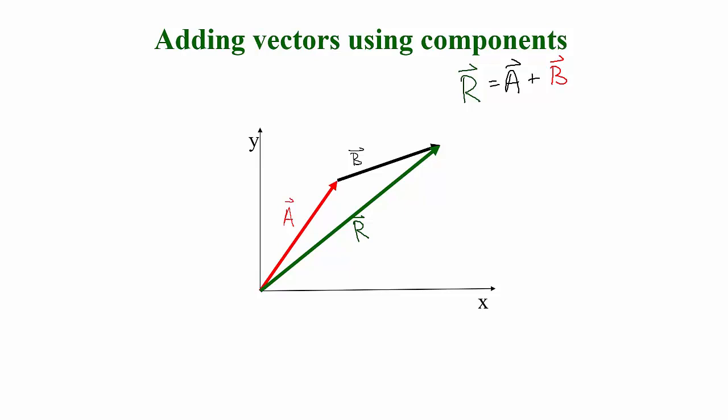This video looks at the process of adding vectors together using the component method. Before we get into calculations, I want to understand what we're doing and why. In this picture, I have two vectors, A and B, and I want to add them together to find the resultant vector R. I'm adding vectors A and B together using the tail-to-tip method.